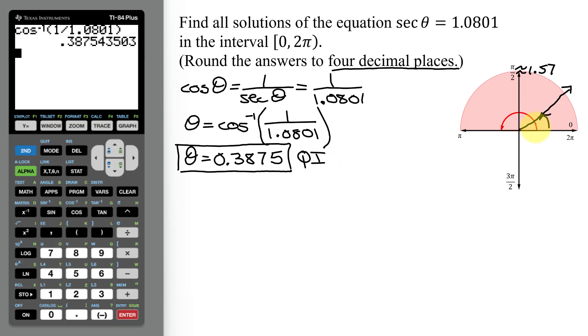So here is my angle theta. And are there any other quadrants in which the secant of theta could equal this number? Well remember, the secant of theta is r over x. And since r is always positive, then the secant of theta is going to be a positive number when x is positive. Well, x is positive here in quadrant 1, but it's also positive here in quadrant 4.